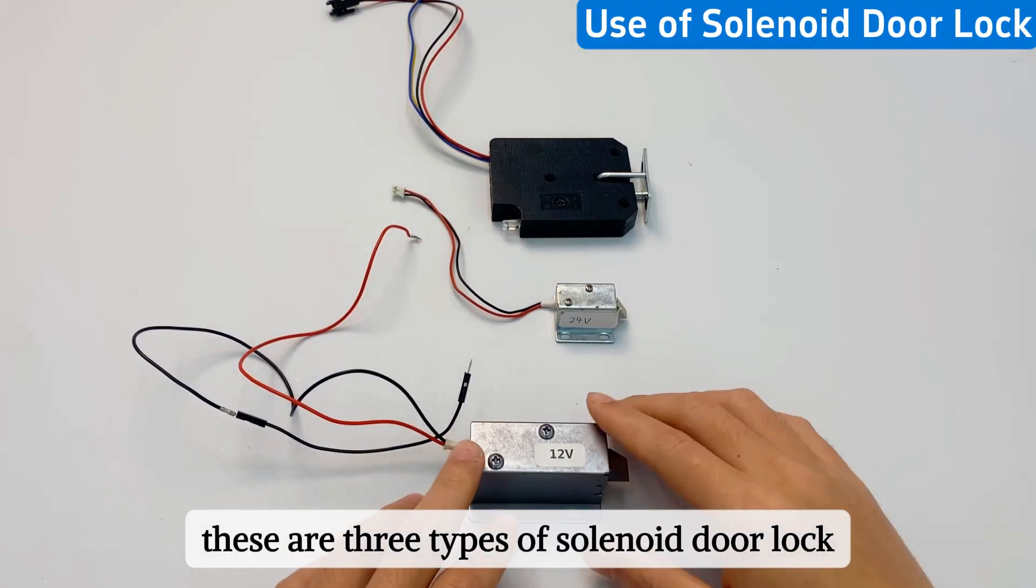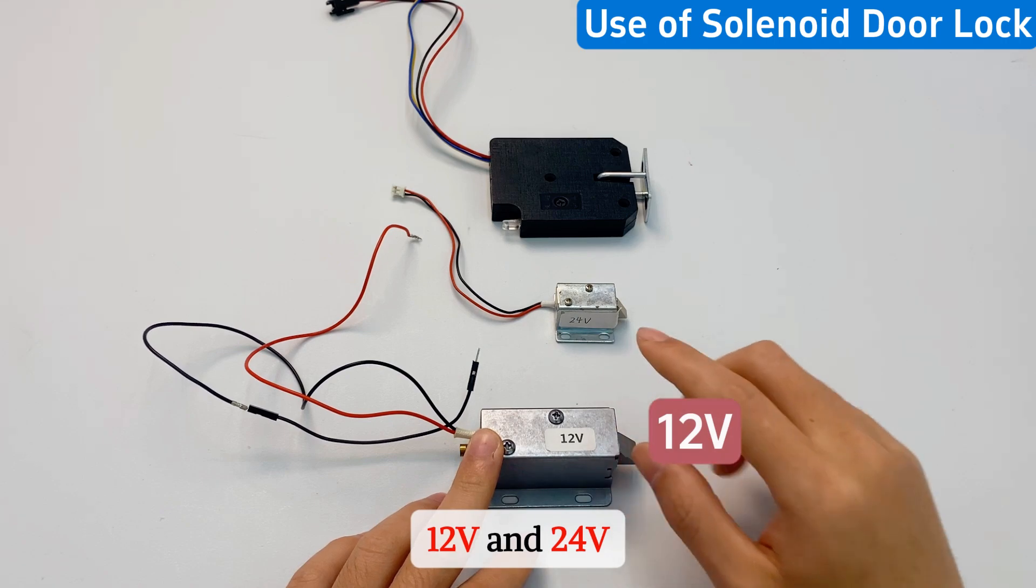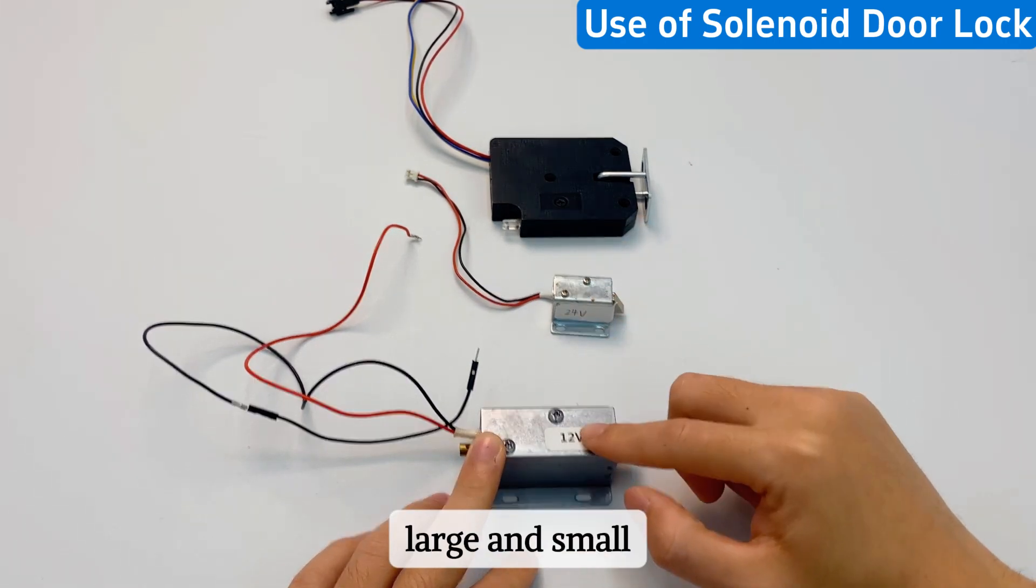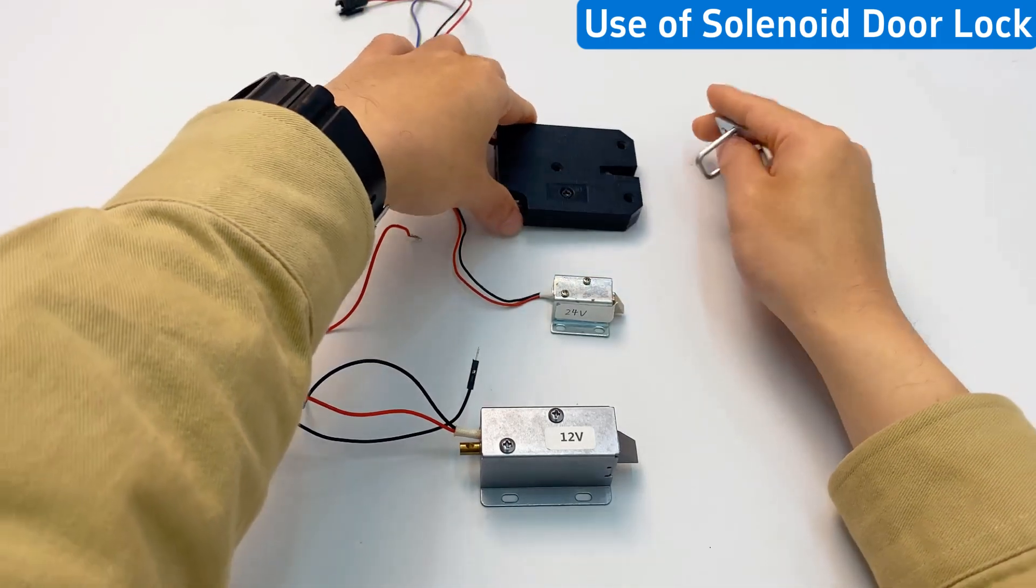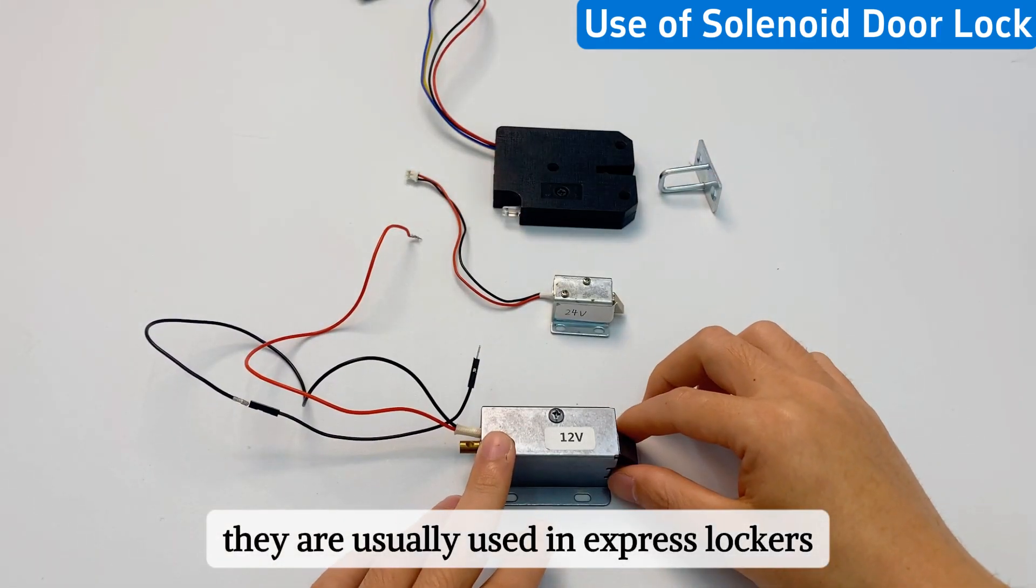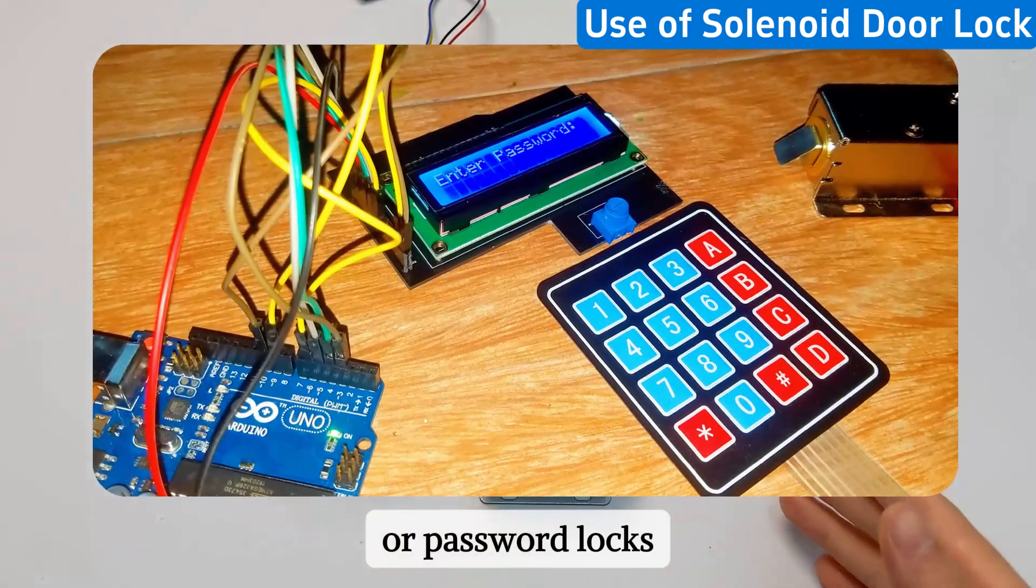These are three types of solenoid door lock: 12 volts and 24 volts, large and small. There is also this snap-on type. They are usually used in express lockers or password locks.